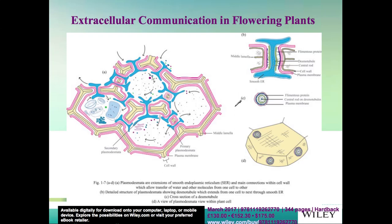There are two schools of thought about how transport of material actually takes place through plasmodesmata. It is still not clear whether it takes place from inside the desmotubule or through the cytoplasmic sleeve space from one cell to the next. Plasmodesmata may be primary or secondary; secondary plasmodesmata are branched, as shown here.